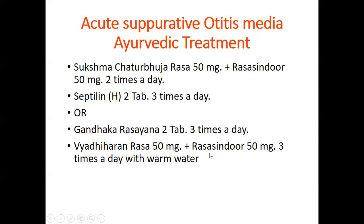These medicines are very hot — ushna and tikshna — and they are kapha-hara in nature, because in Ayurveda this condition is due to vitiated or impure Kapha dosha in the body.